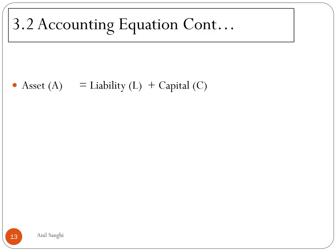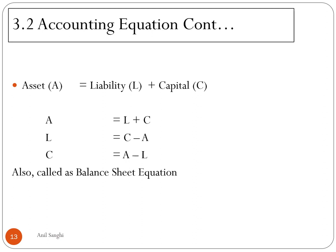So what does an accounting equation say? An accounting equation is a linear equation which says assets are always equal to liability plus capital — whatever the business owns always equals what it owes to outsiders or to the proprietor. So A = L + C, and since it is a linear equation, you can also say liabilities equals assets minus capital, or capital equals assets minus liabilities. The balance sheet is called a balance sheet because both sides — the asset side and the liability side — are always equal.